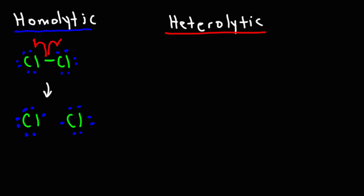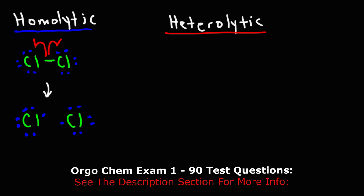That's an example of a homolytic bond cleavage — when the bond breaks apart and each atom gets one electron from that bond. In a heterolytic bond cleavage, when the bond breaks, one of the atoms will take both electrons, leaving the other one without any.